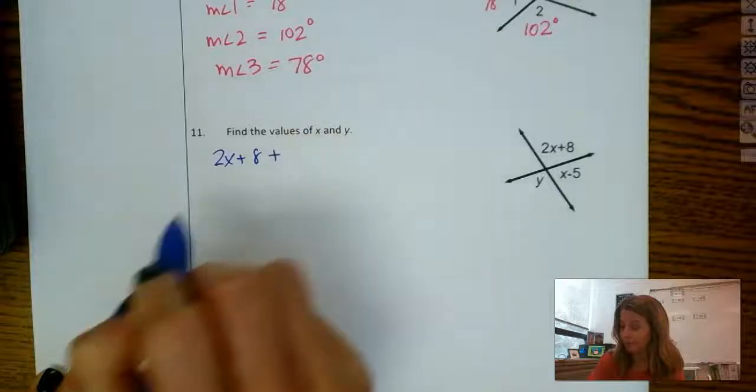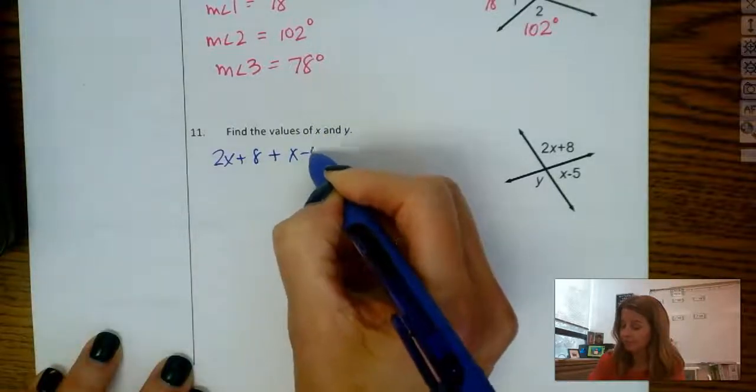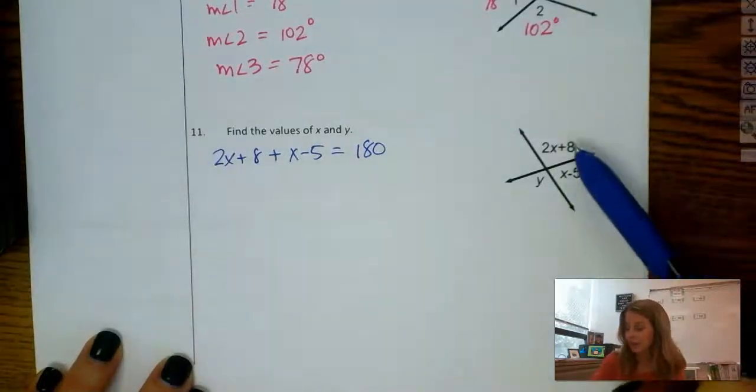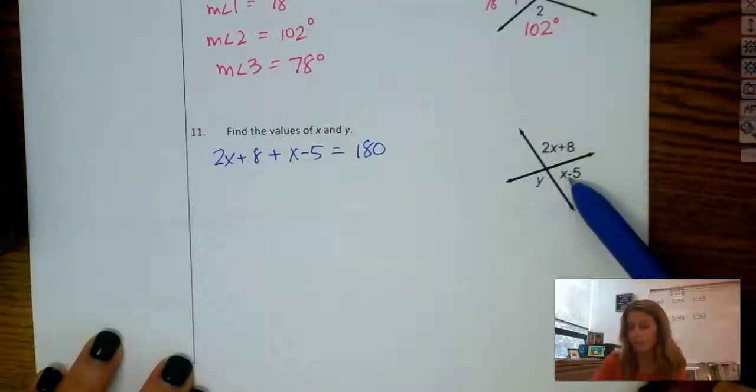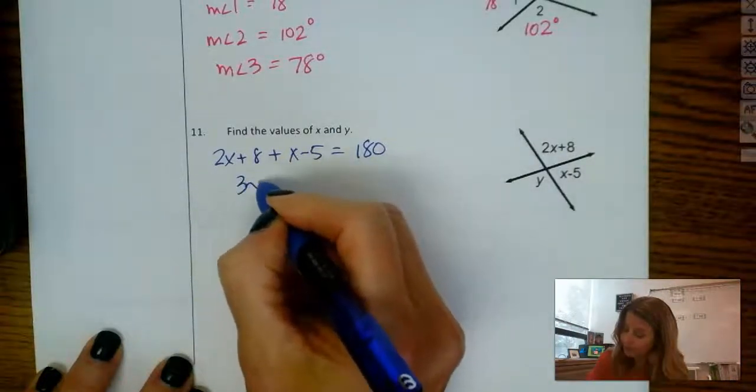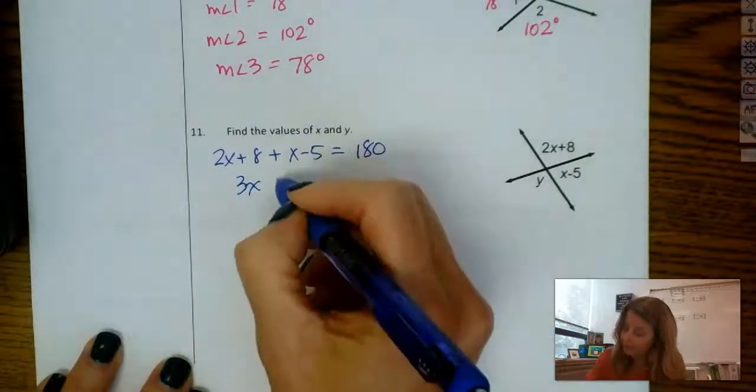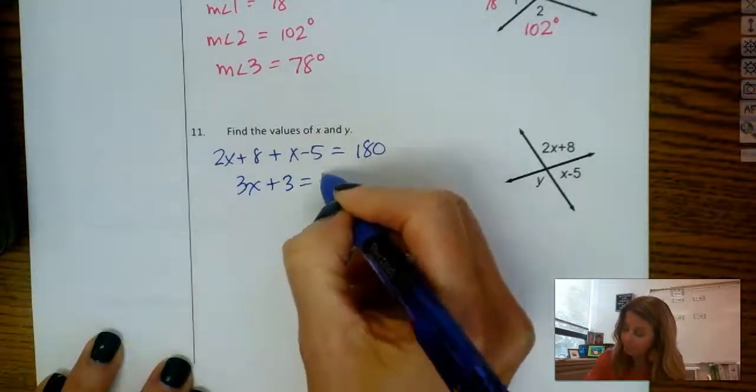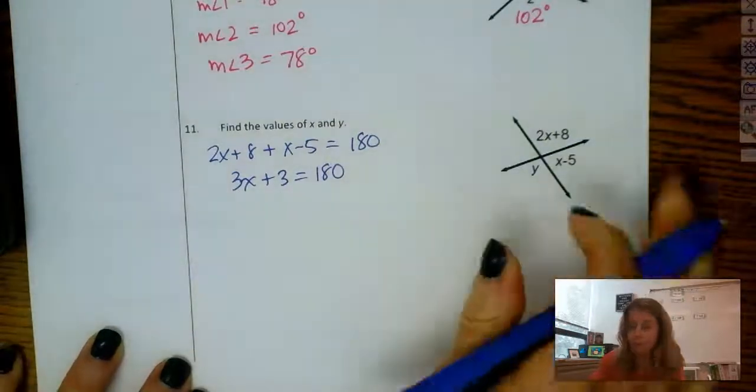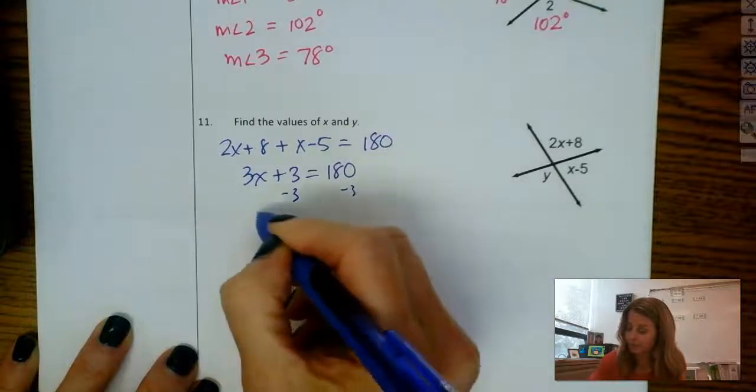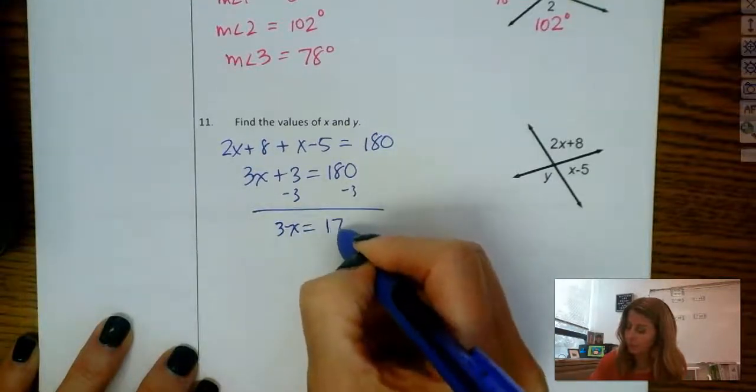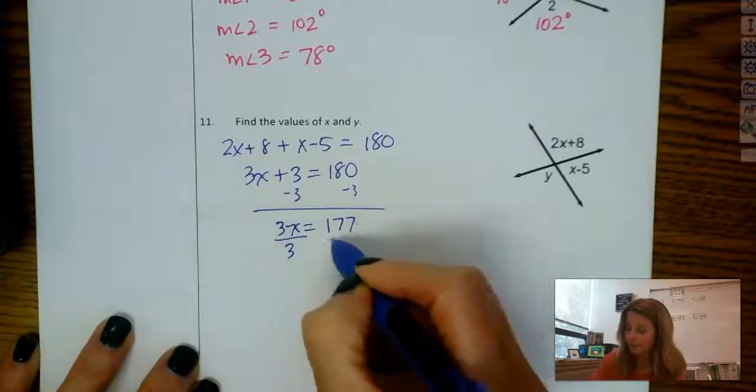So 2x plus 8 plus x minus 5 equals 180. So we can solve for x, and then I could just plug in x for either one of these angles and figure out why. So combine like terms here. So we have 3x plus 3 equals 180. I'm going to take away 3 from both sides. So that gives me 177. Divide by 3.